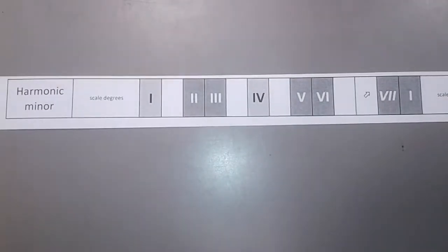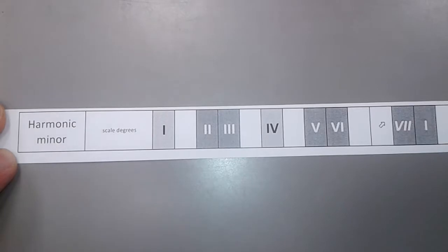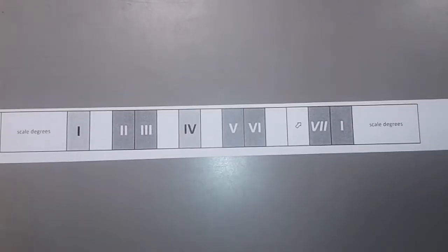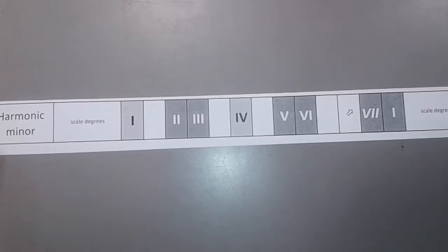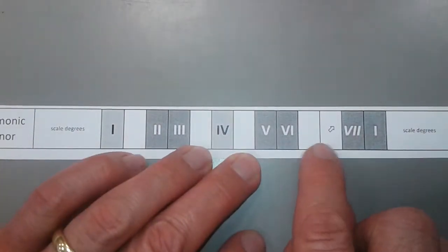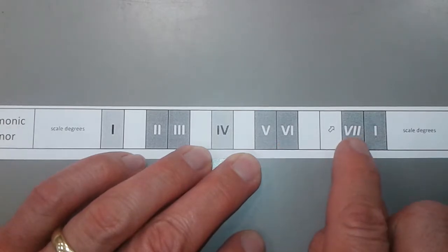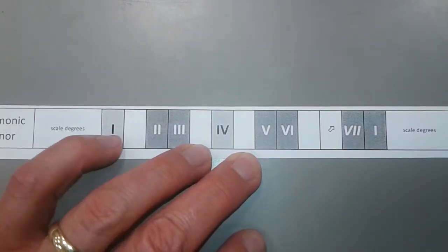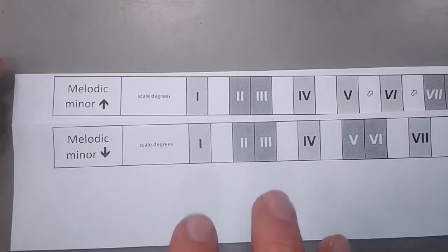There's the harmonic minor, from which most of the harmonies are derived in a minor key, the chords. Now, this scale is not very good for melodies in general, because as you see here, there's a huge gap between notes six and seven.